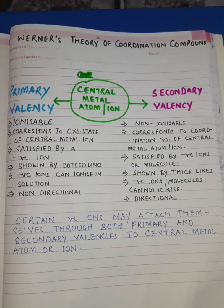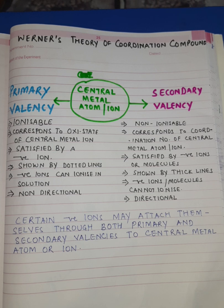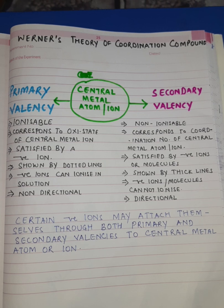When we study coordination compounds, the study of these compounds is incomplete without mentioning Werner's theory. There was a scientist Alfred Werner who studied coordination compounds in detail. He did a lot of experiments where he reacted cobalt chloride with ammonia molecules and prepared many coordination compounds. He not only prepared them, but also studied their properties in detail and put forward all his studies in the form of a theory, popularly known as Werner's theory of coordination compounds.